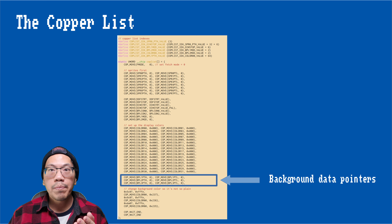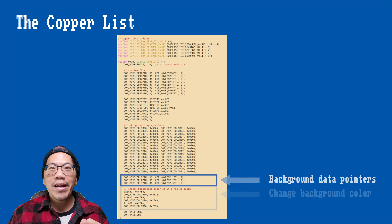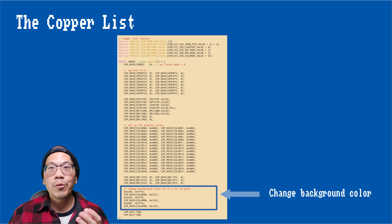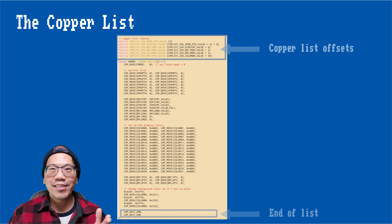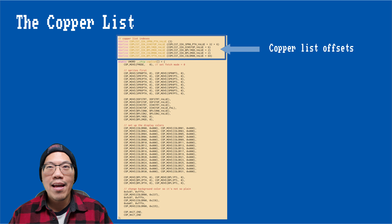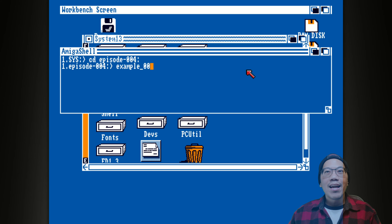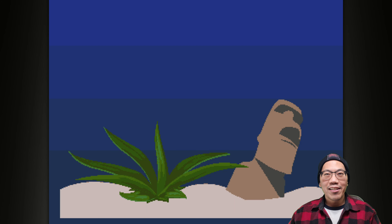Following that is the color palette and then the pointers to the background image. Here we change the background color slightly so that it doesn't look quite as boring, and then we finally end the copper list with two wait instructions. I've made it the habit of defining a few constants so I can later conveniently access certain parts of the copper list in my program. And this is how it looks like.